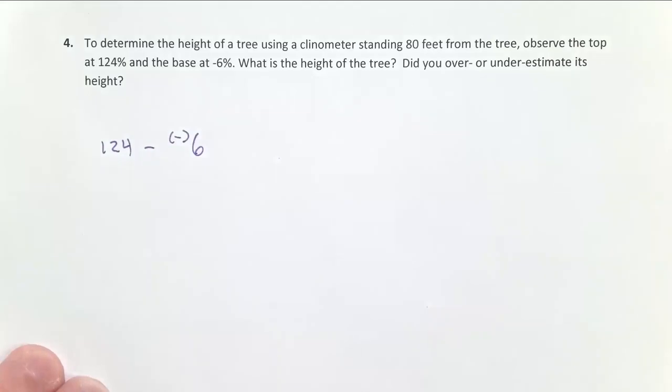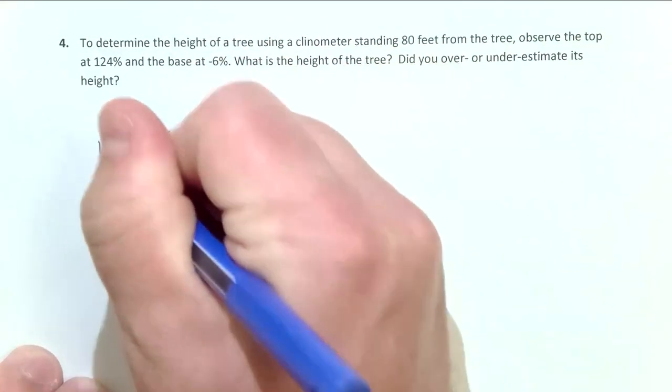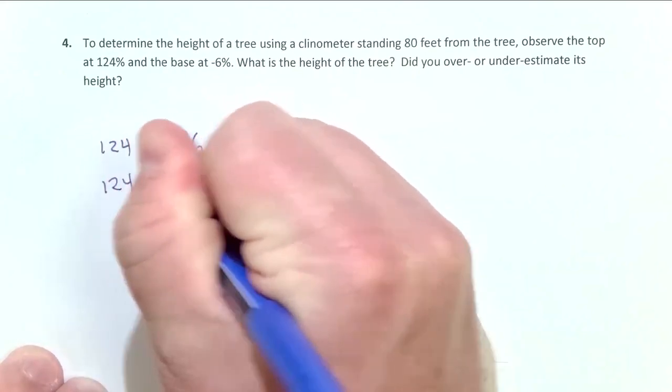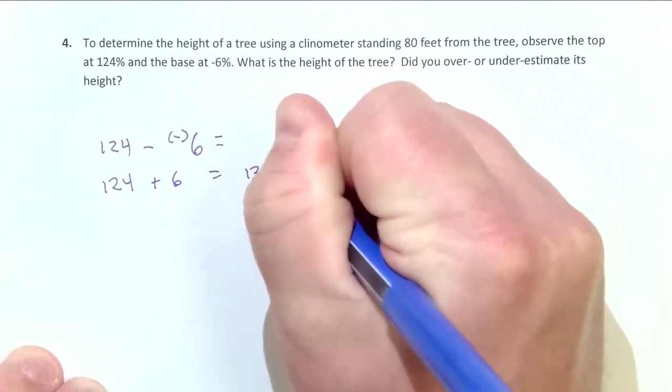Subtracting a negative is the same as addition, right, and so this is really equal to 124 plus six, which is going to equal 130 percent.